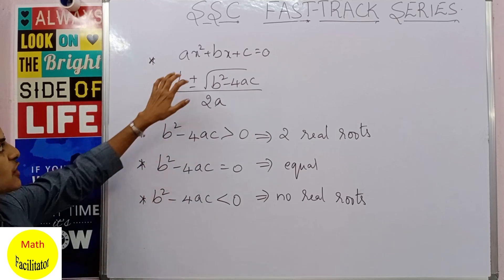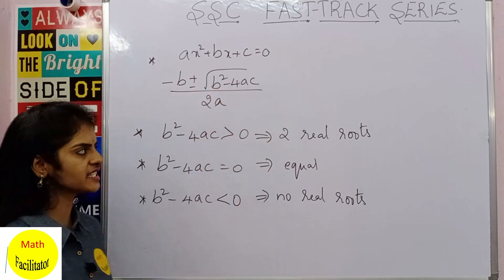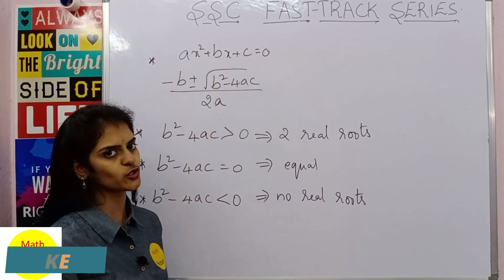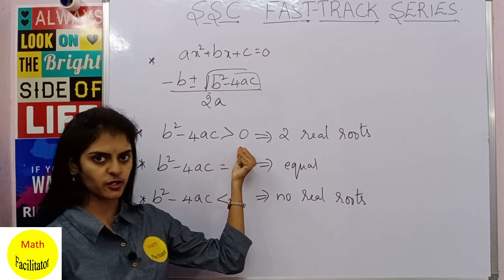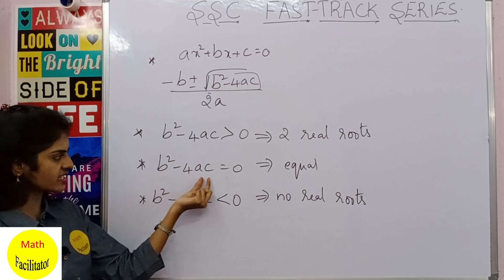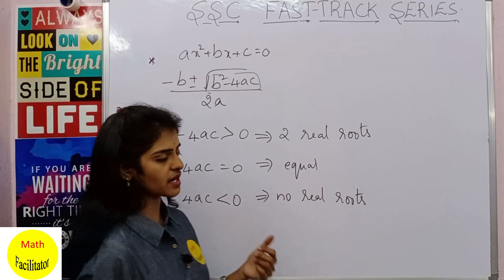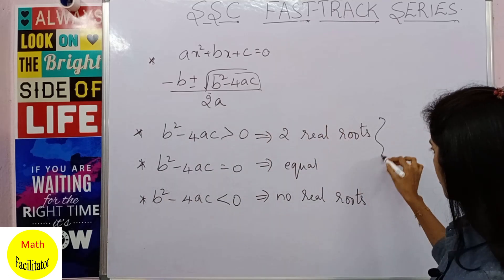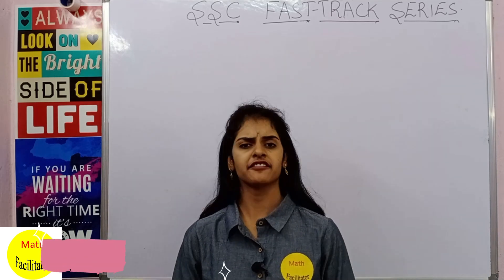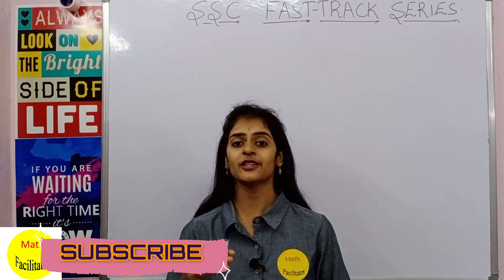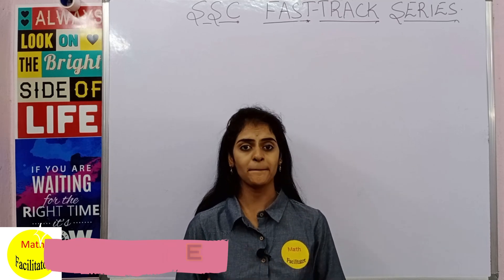Looking back at the important concepts: for ax² + bx + c = 0, the roots are given by (-b ± √(b² - 4ac)) / 2a. The part b² - 4ac is called the discriminant. If the discriminant is greater than zero, the equation has two distinct real roots. If it equals zero, the roots are equal. If it is less than zero, there are no real roots. Based on this you may get one-marker or two-marker questions, and solving the full equation gets you four marks. Do subscribe to this channel so you get notified when we upload new videos, and don't forget to like and share.